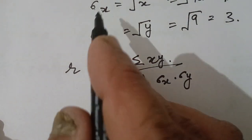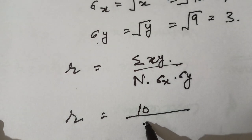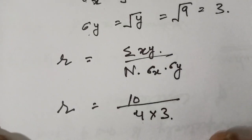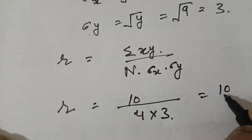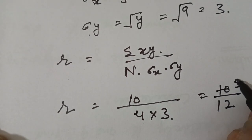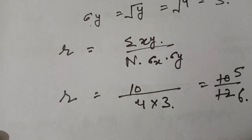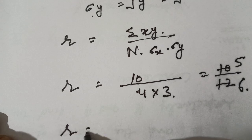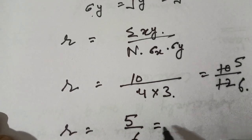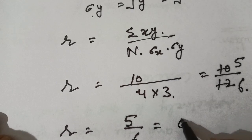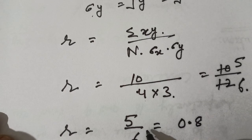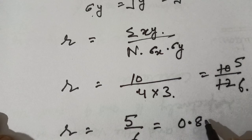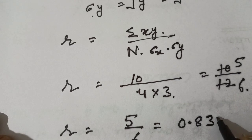Putting in the values: r equals 10 divided by (4 into 3), which is 10 divided by 12. Simplifying, 10/12 equals 5/6. Dividing 5 by 6 gives approximately 0.833.